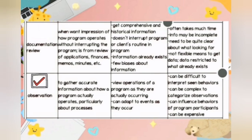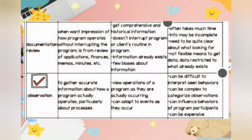Fourth, observation. Overall purpose: to gather accurate information about how a program actually operates, particularly about processes. Advantages: view operations of a program as they are actually occurring. Challenges: can be difficult to interpret behaviors observed, can be complex to categorize observations, can influence behaviors of program participants, and can be expensive.